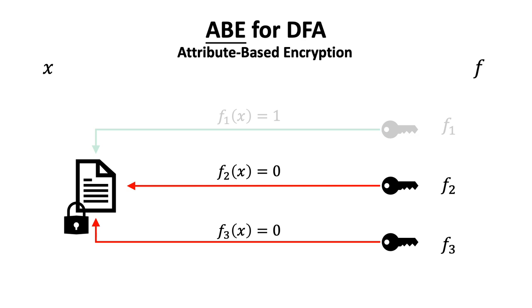Otherwise, we require the key holder cannot get any non-trivial information of message M, such as those for F2 and F3 in the example.